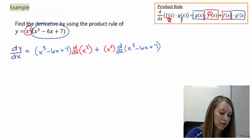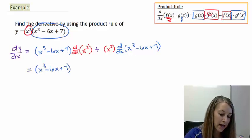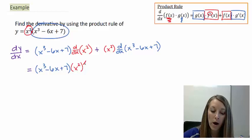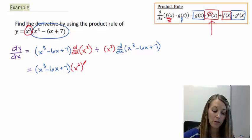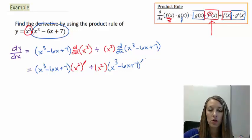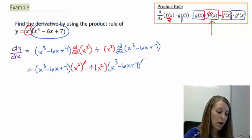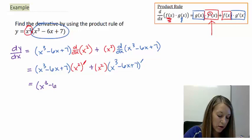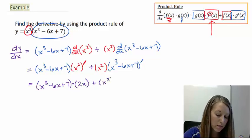A different notation for this: instead of writing d/dx of x squared, a shorter way is to write x squared with a prime — just make sure the prime is diagonal so it doesn't look like a one. So the product rule written in prime notation is: (x cubed minus 6x plus 7) times x squared prime, plus x squared times (x cubed minus 6x plus 7) prime. Now actually taking the derivatives: the derivative of x squared is 2x by the power rule, and the derivative of x cubed minus 6x plus 7 is 3x squared minus 6.